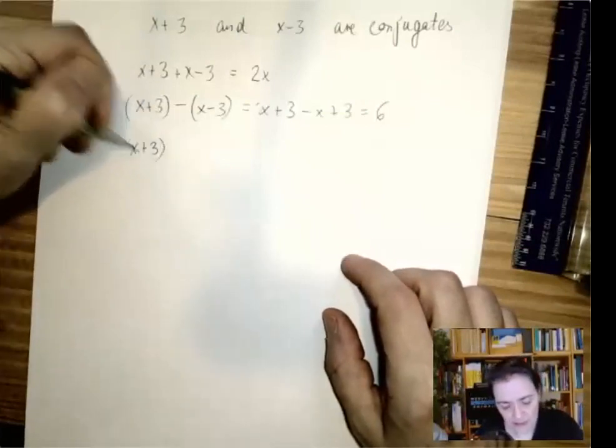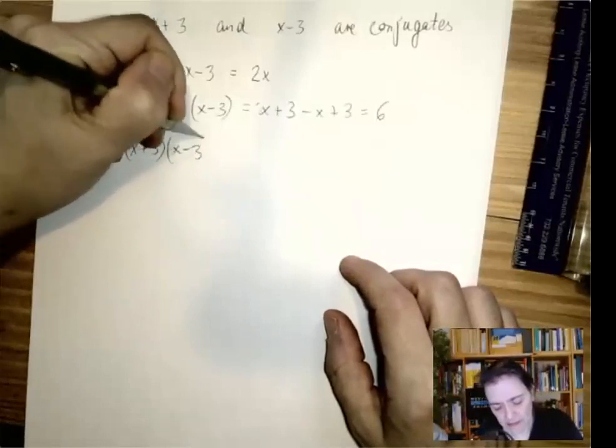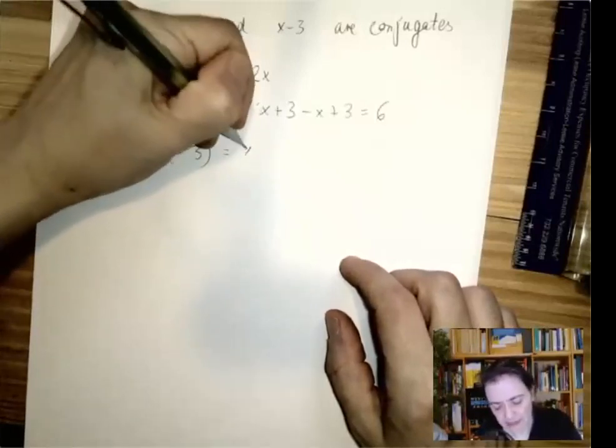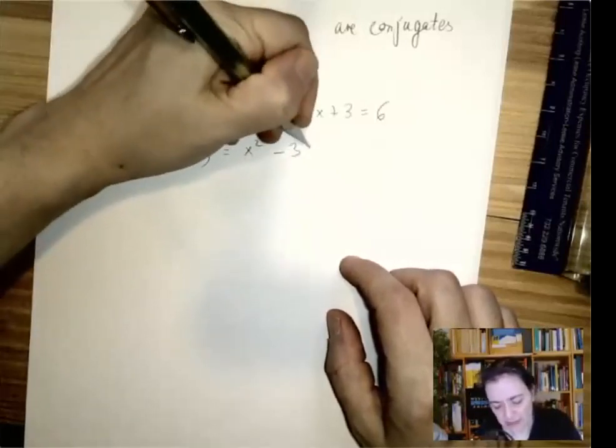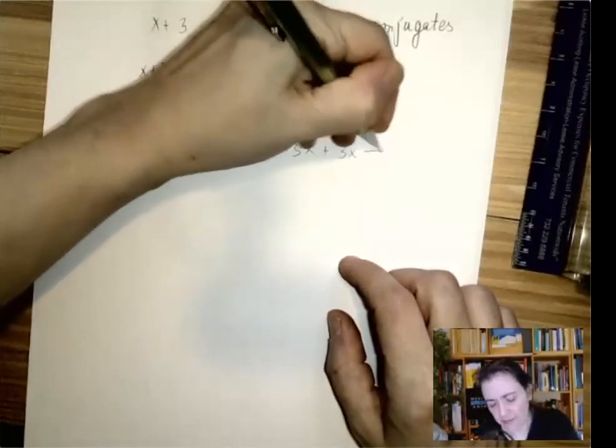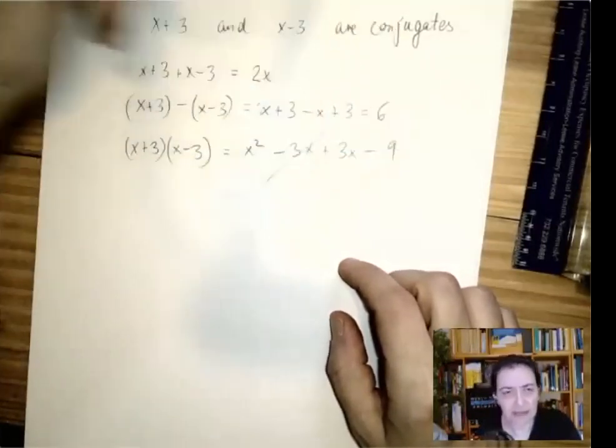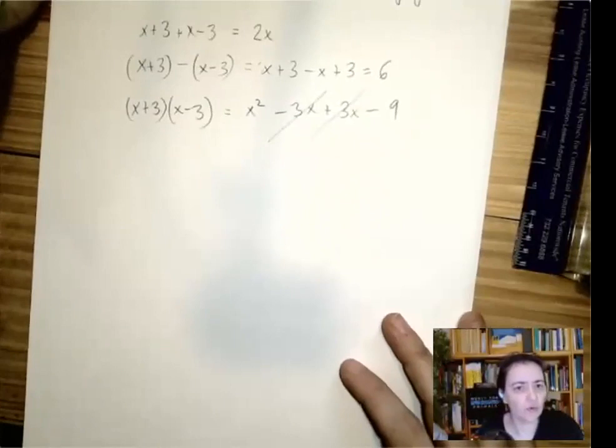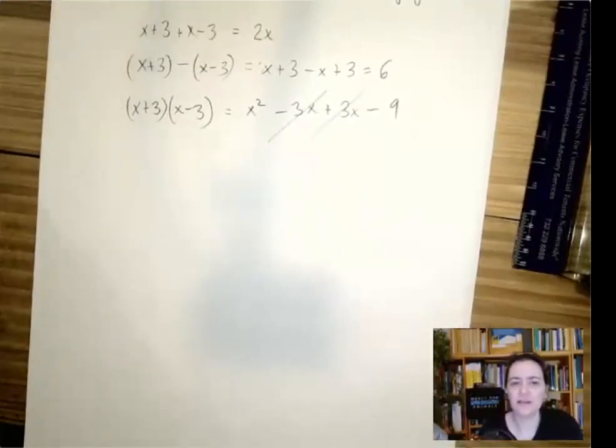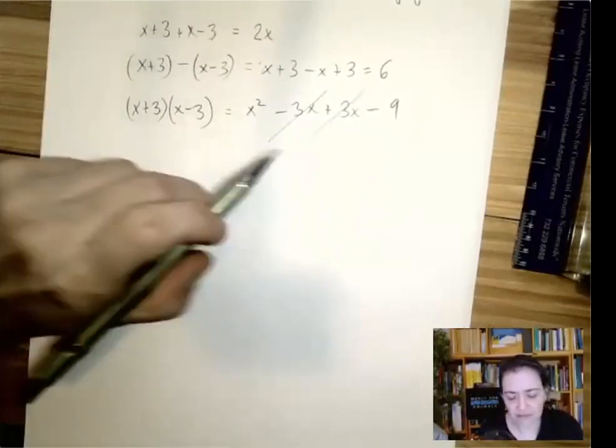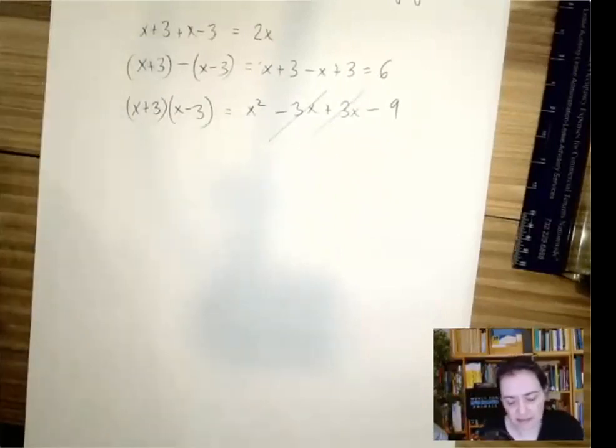So if we multiply x plus 3 times x minus 3, we get x squared minus 3x plus 3x minus 9, and minus 3x and 3x cancel out each other. Only conjugates do that. No other term, no other situation will cause this sort of cancellation.